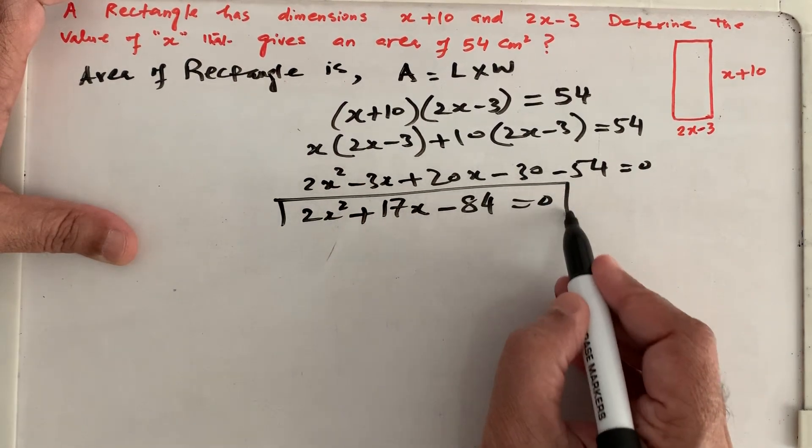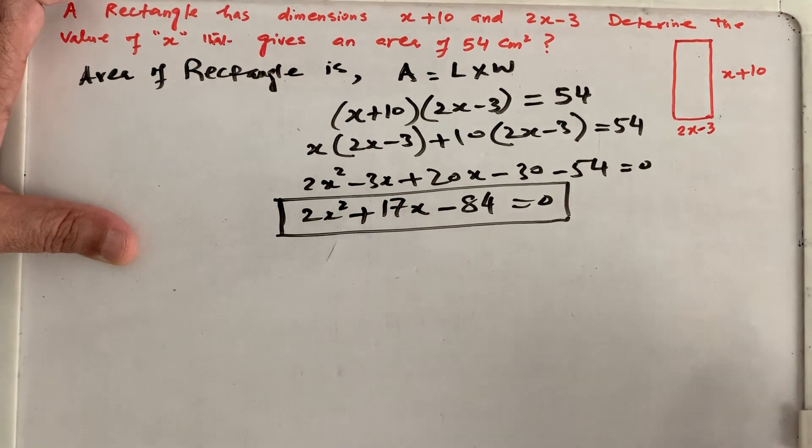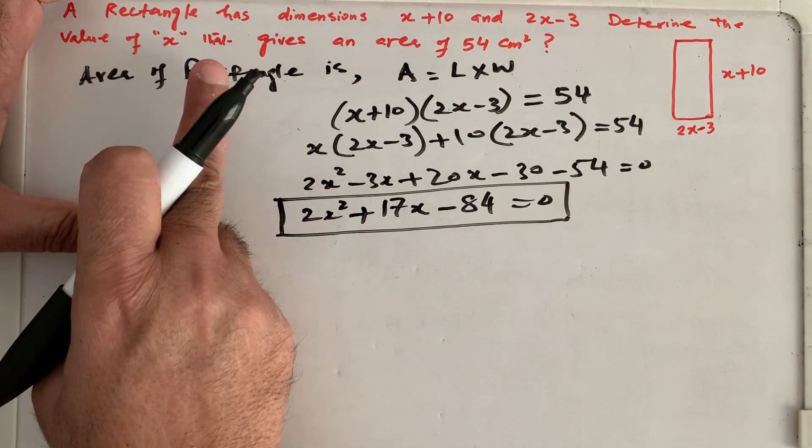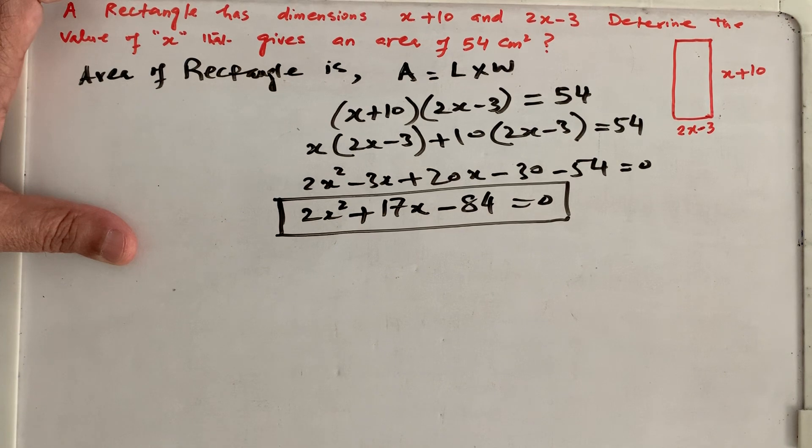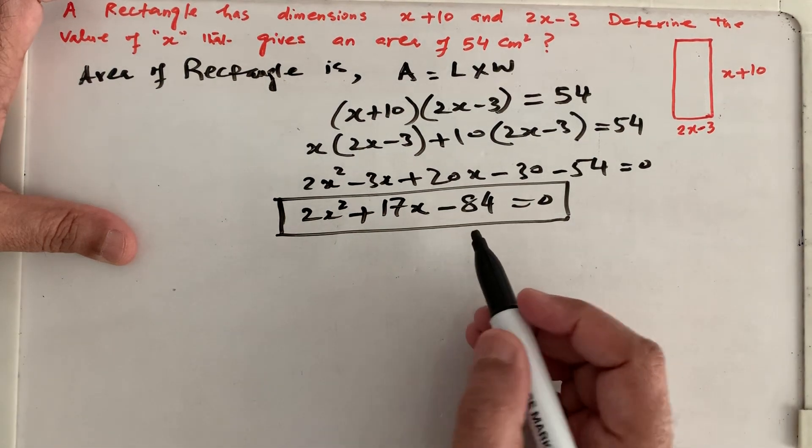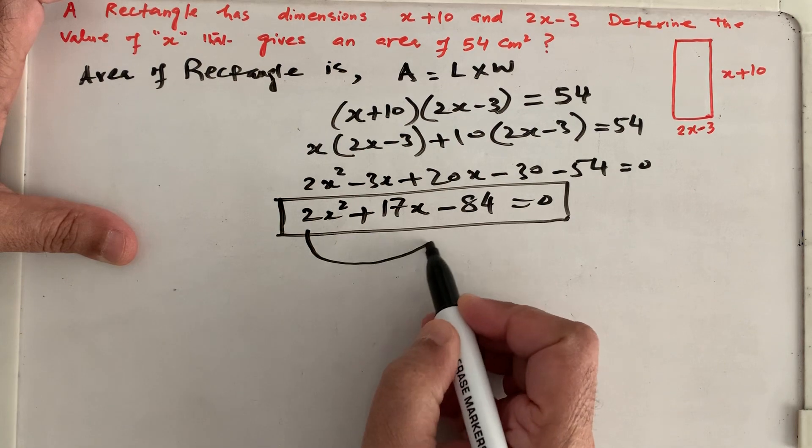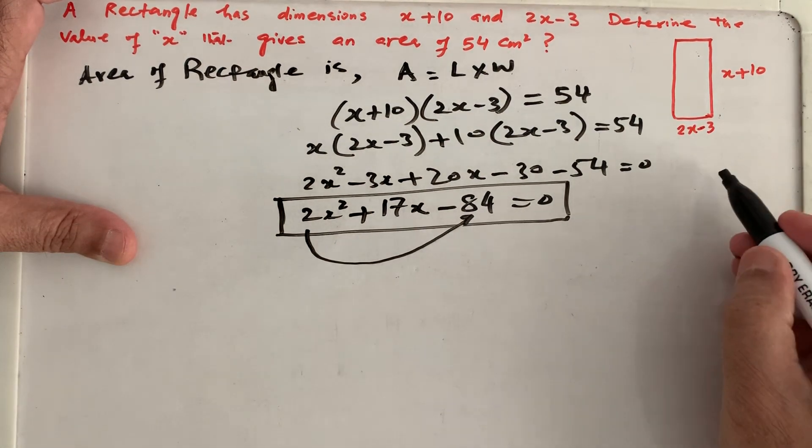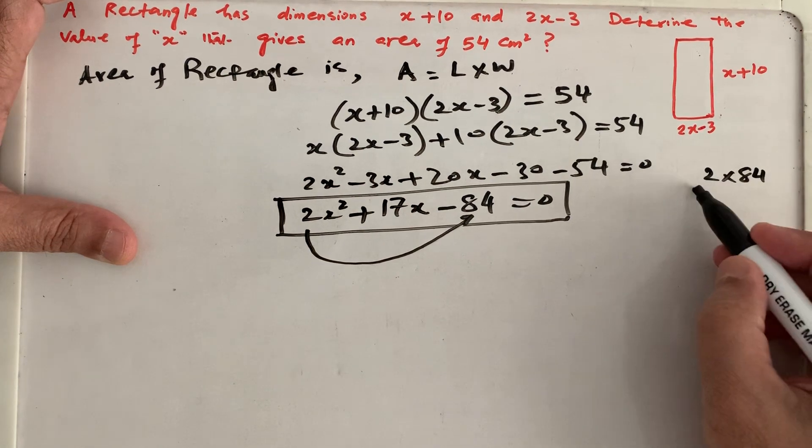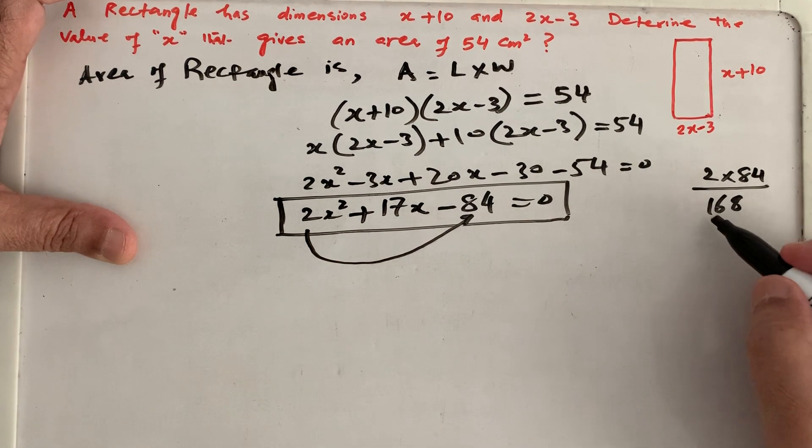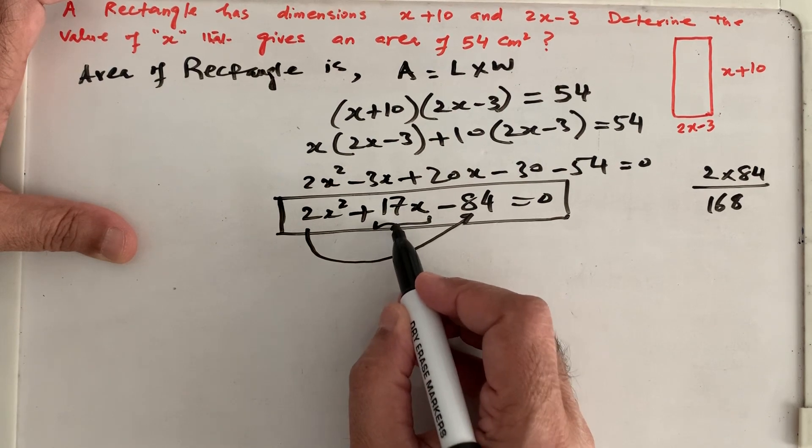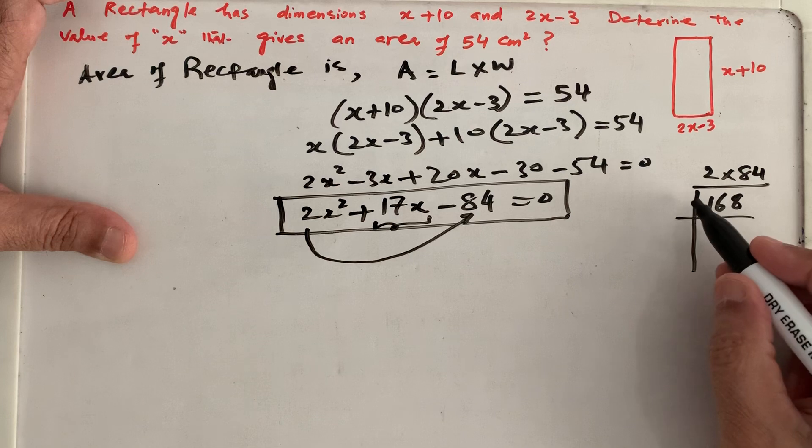We have to solve this equation for the value of x because he is asking value of x which gives the area of 54. And we have equated that to 54 cm square. So whatever we get in x, that will be the value in cm. So now we have to break it. So what is our rule? Rule is that coefficient of x square will be multiplying with a constant. So what we have to do is 2 times 84, and 2 times 84 is 168. And we have to break 168 in two factors which on multiplication or subtraction give me the middle term which is 17 plus 17x. So I try to break it.